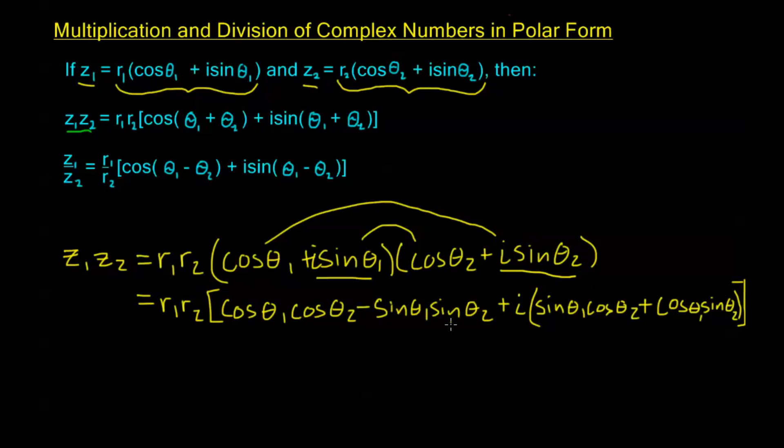Now we have some identities here that we're used to seeing. I still have Z₁Z₂ on the left and r₁r₂. But cos θ₁ cos θ₂ minus sin θ₁ sin θ₂ is my addition formula for cosine. We know this equals cos(θ₁ + θ₂).